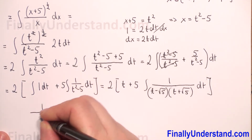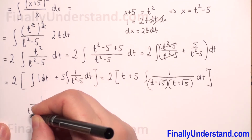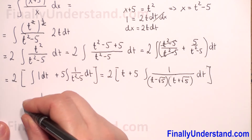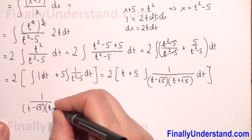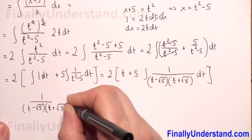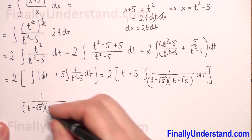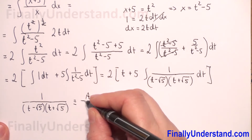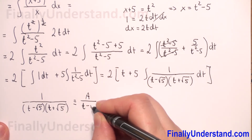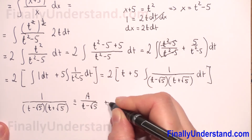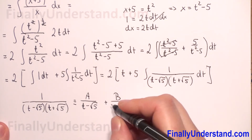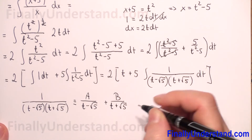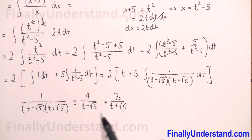We have 1 over (t minus square root of 5)(t plus square root of 5), which is identically equal to A over (t minus square root of 5) plus B over (t plus square root of 5). Now we need to find A and B.